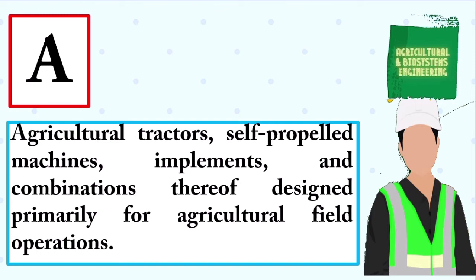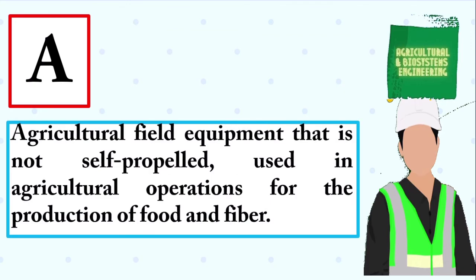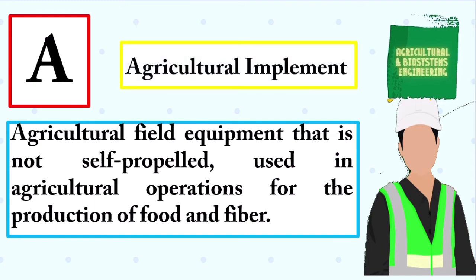Agricultural field equipment that is not self-propelled, used in agricultural operations for the production of food and fiber. The answer is: agricultural implement.